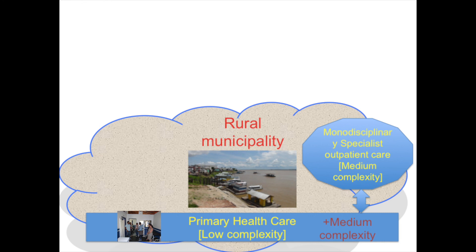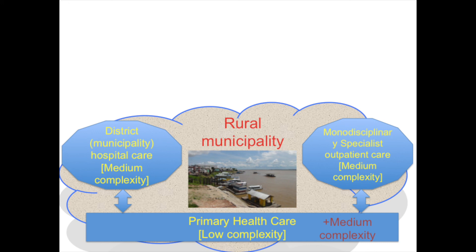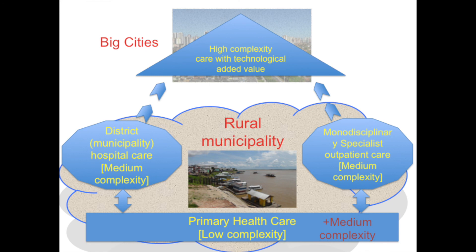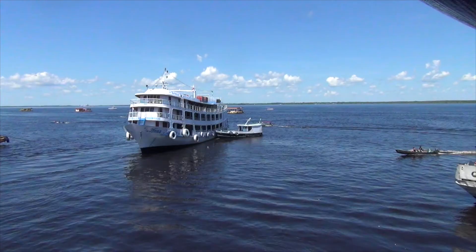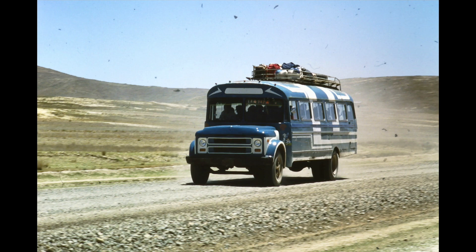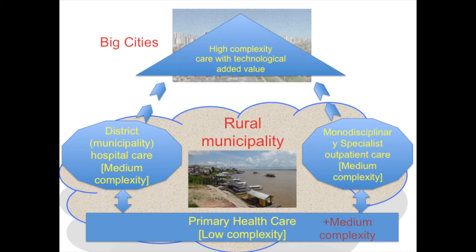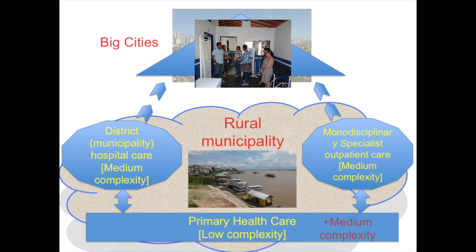Whenever the problem is purportedly monodisciplinary, the patient is referred to the relevant outpatient care specialist. Conversely, whenever the problem is multidisciplinary or in need of intensive health care, the patient is referred to the nearest district or municipal hospital. In bigger cities, a third level of care offering high-complexity care is usually available. However, occasionally, only with expensive, long-distance displacement from the countryside can the patient receive access to such a level of care.